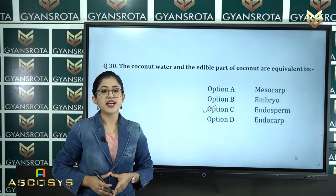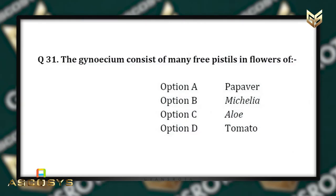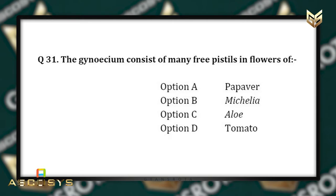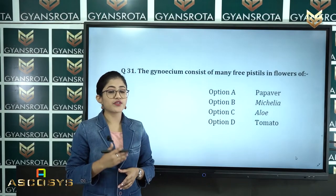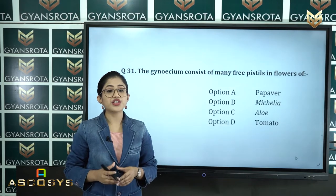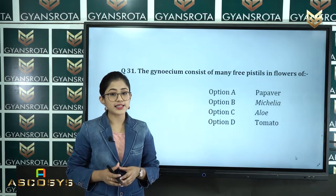Question 31: The gynoecium consists of many free pistils in flowers of option A: Papaver, option B: Michelia, option C: Aloe vera, and option D: Tomato. In which of the following flowers does the gynoecium consist of many free pistils?